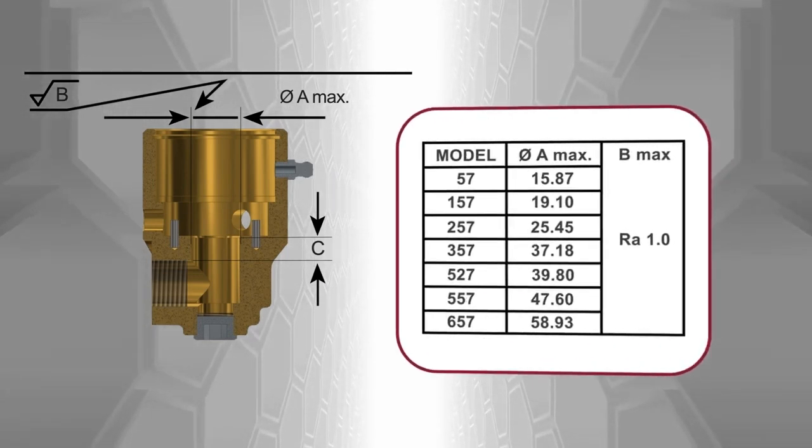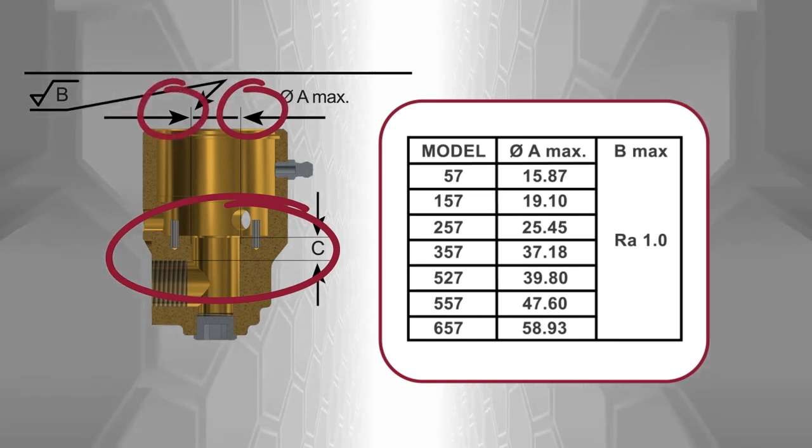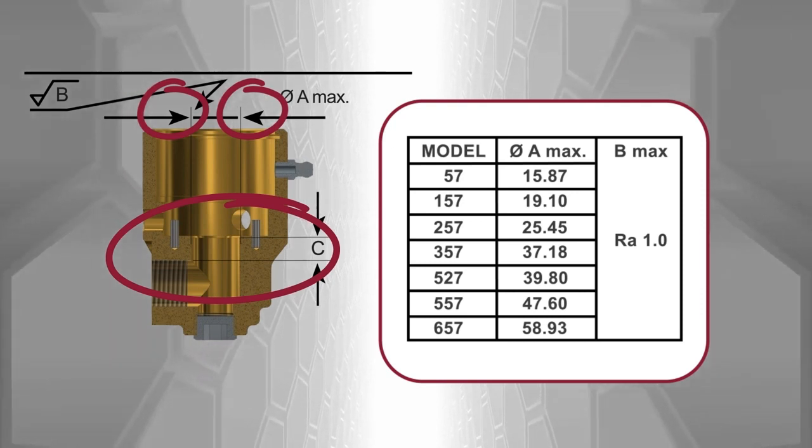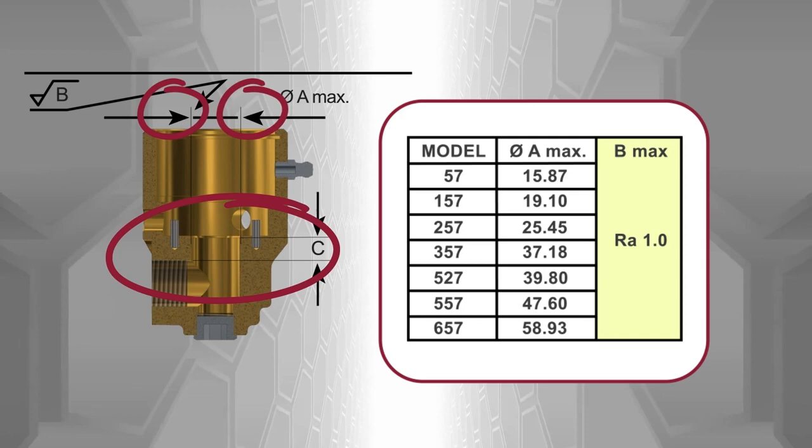Within the area labelled C, the bore surface must be smooth to a maximum roughness level value B. For all 57 series models, the maximum roughness value for B is RA 1.0.